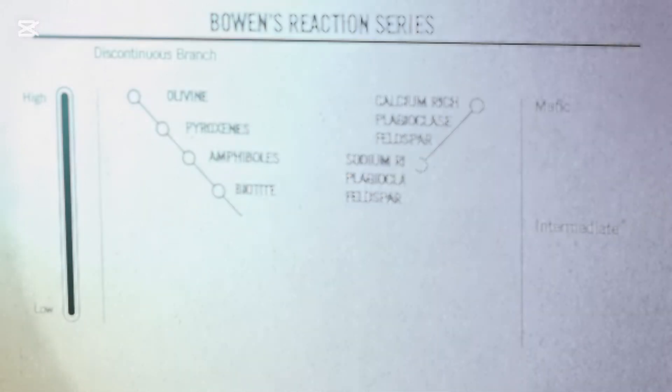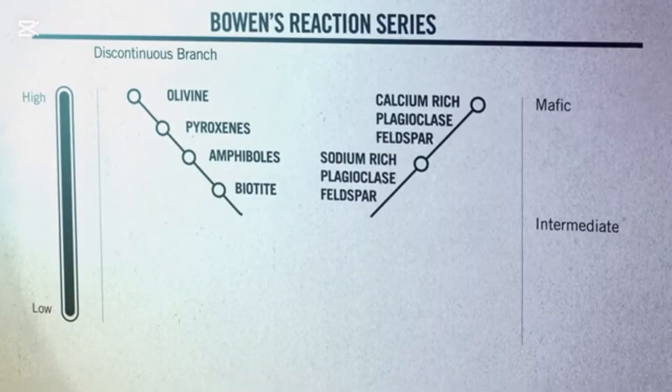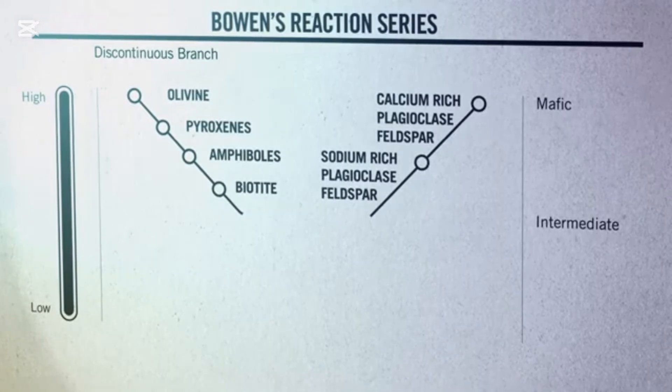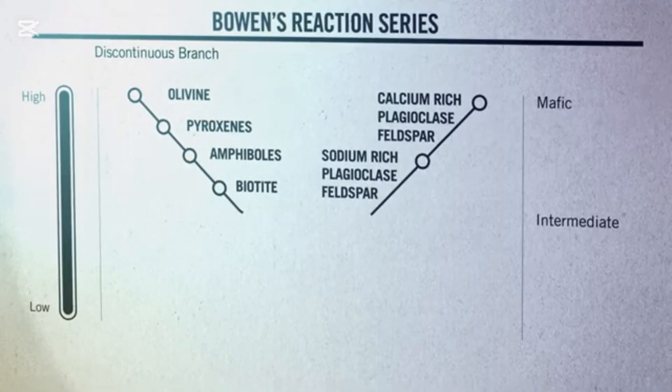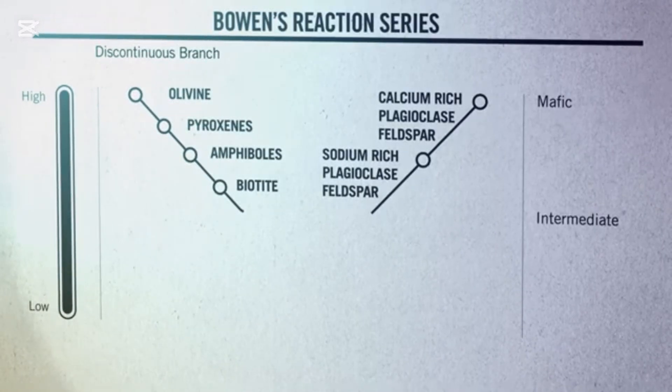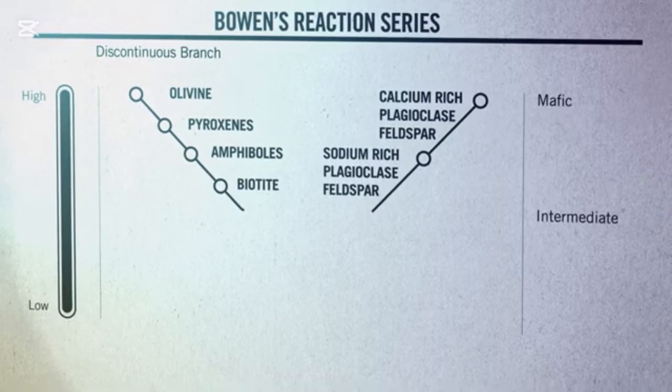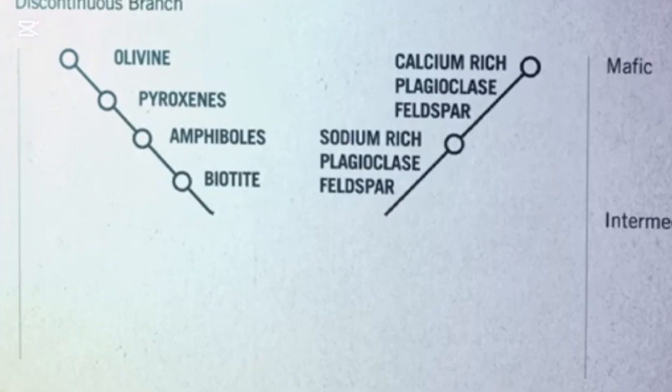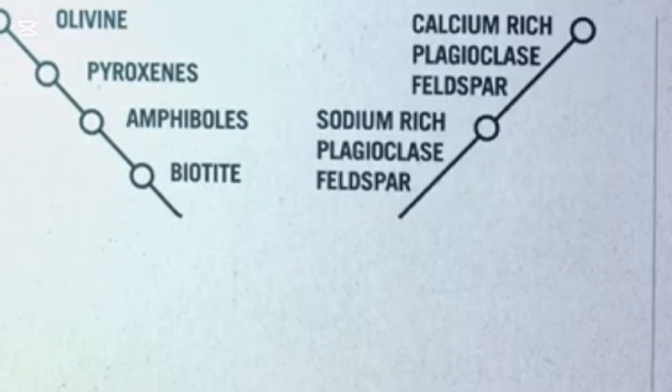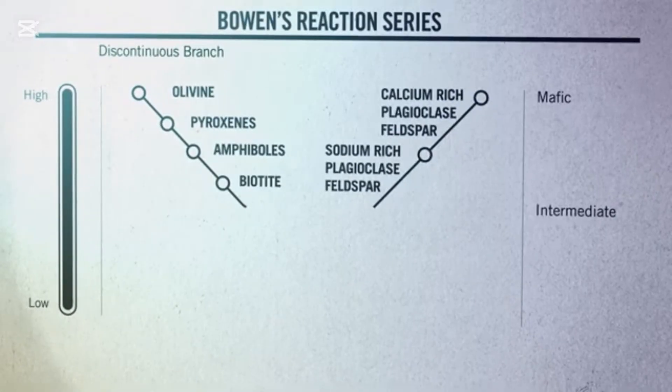At high temperatures, plagioclase makes a dark gray version of the mineral, and more sodium at lower temperatures, making a white version of the mineral. However, unlike the discontinuous series, the arrangement of the atoms in plagioclase does not change as temperatures cool. Therefore, because the atomic arrangement remains the same, the mineral is still plagioclase, just with a slightly different composition in what Bowen called the continuous branch of the reaction series.